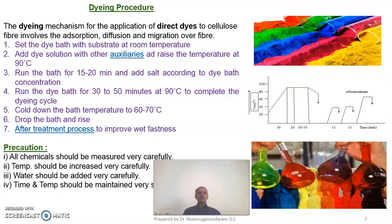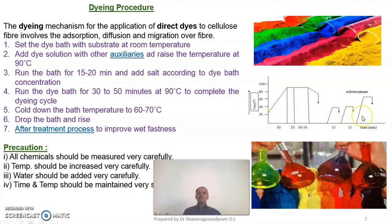Certain precautions must be observed during dyeing of direct dyes with cotton material. All chemicals should be measured very carefully. Temperature should be increased gradually. Water should be added very carefully during the dyeing process. Time and temperature should be maintained sincerely — only then can you achieve effective dyeing. Please look at the figure, which shows the time required during the dyeing process: adding the dye solution, adding the salt concentration, adding temperature, and the time taken for each step of the after-treatment process.